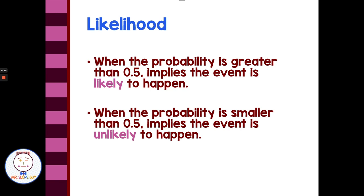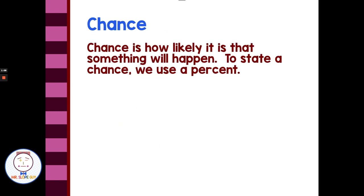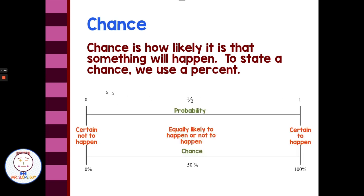When the probability is greater than 0.5, that implies that what we're talking about is likely to happen. When the probability is smaller than 0.5, it implies that the event is unlikely to happen. To state chance, we use a percent — from 0% to 100%. Like when the weatherman says there's an 80% chance of rain, that's chance as a percent. In probability, if something is certain to happen, it's 1. If it's impossible to happen, it's 0. Most of the time, probability is a fraction somewhere between 0 and 1.